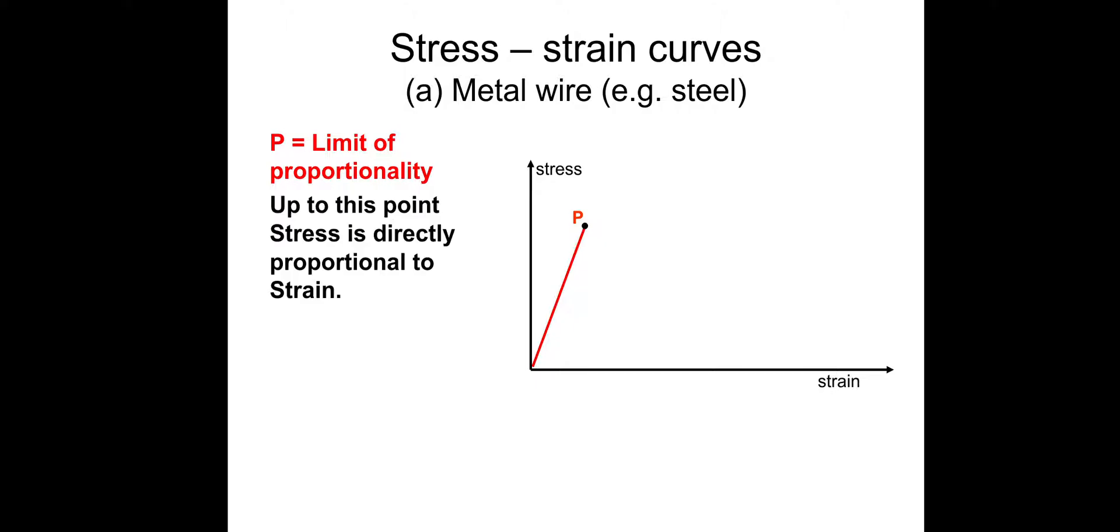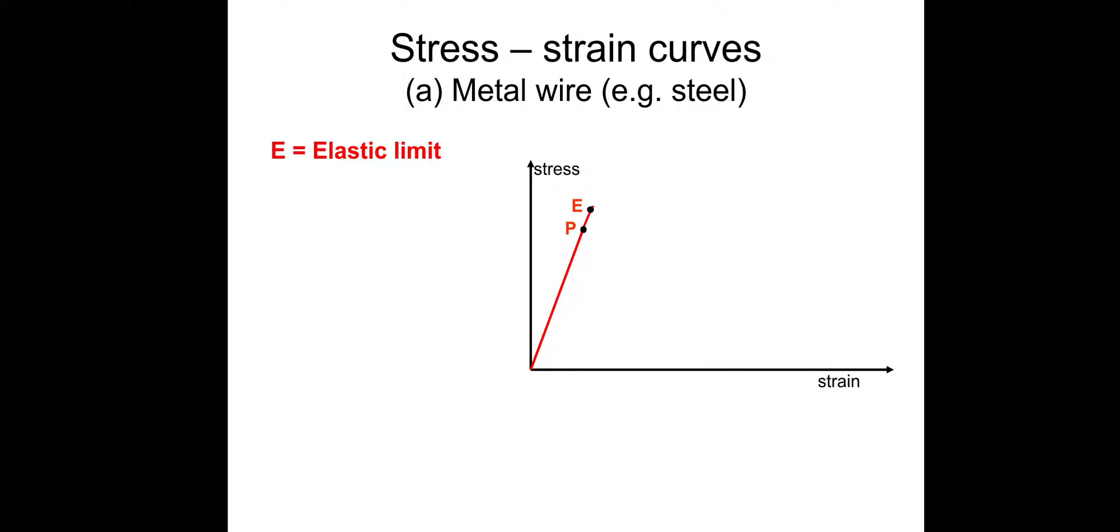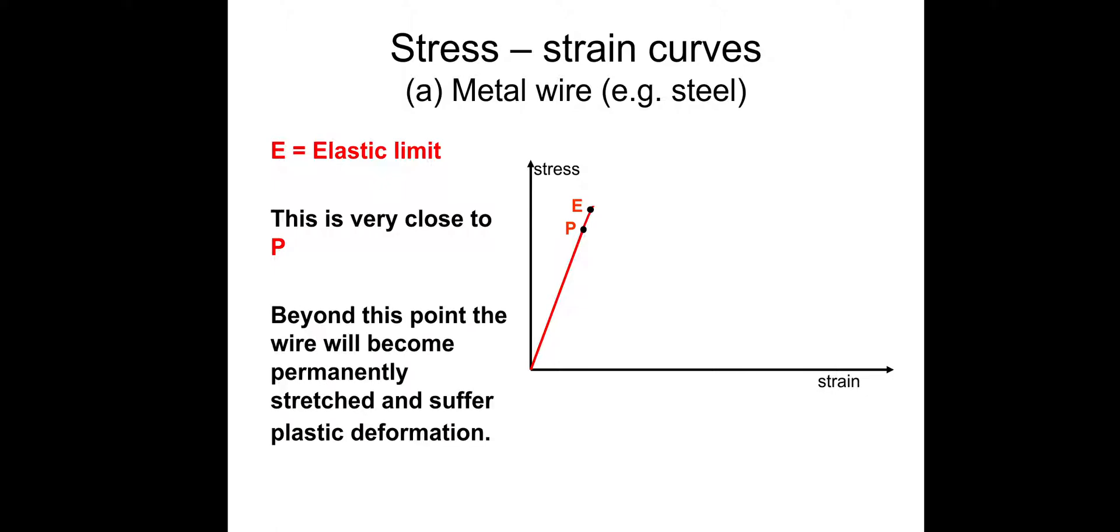So Stress Strain Curves, metal wire, example steel, might look like this. So a straight line up to P, P is the limit of proportionality. So up to this point, stress is directly proportional to strain. E will be the elastic limit, which is very close to P. It's very close, as in your exam, basically the same place. So beyond this point, the wire will become permanently stretched and suffer plastic deformation.